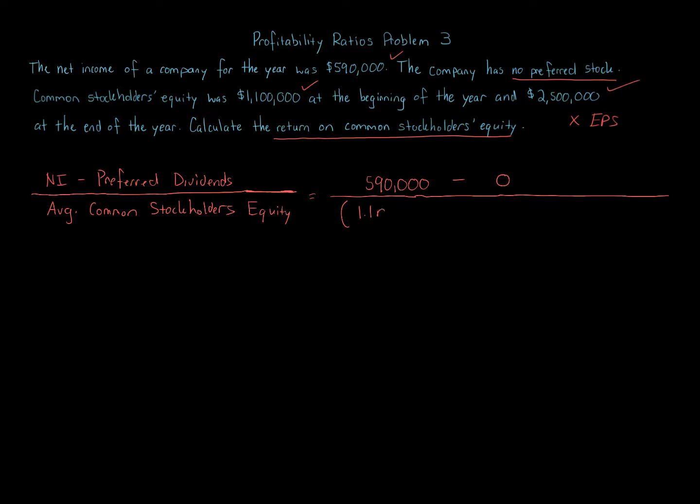So we take 1.1 million plus 2.5 million and divide that by 2. The denominator is going to be $1.8 million. Again, these are dollar amounts, not shares of stock. Caught myself earlier, didn't I? So that's important to remember.